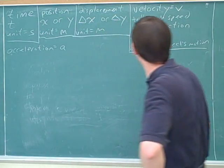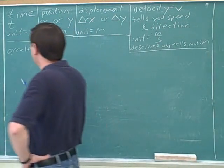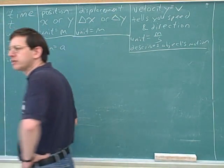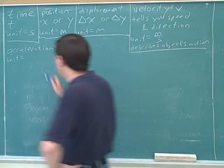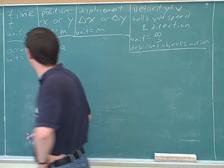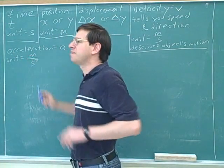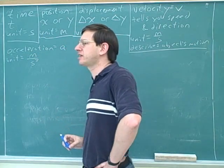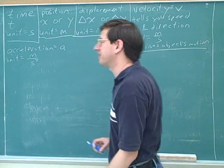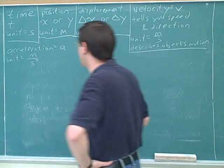Now we have to describe what acceleration is telling us. Let's talk about the unit. The unit for acceleration is meters per second squared — that's the most complicated unit we've seen so far, and it's important to memorize. You can see how easy it is to confuse the units of acceleration and velocity, so we have to keep those separate.